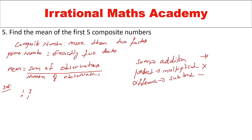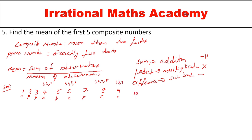4 is a composite number with factors 1, 2, and 4. 5 is prime. 6 is composite with factors 1, 2, 3, and 6. 7 is prime. 8 is composite with factors 1, 2, 4, and 8. 9 is composite with factors 1, 3, and 9. 10 is composite with factors 1, 2, 5, and 10. So the first five composite numbers are 4, 6, 8, 9, and 10.